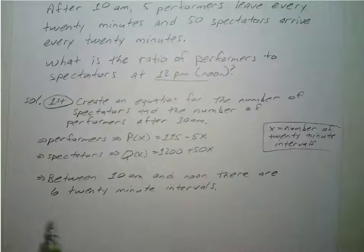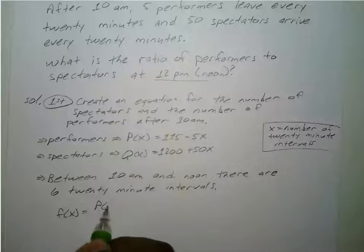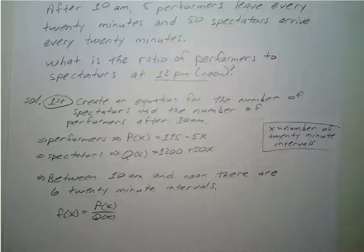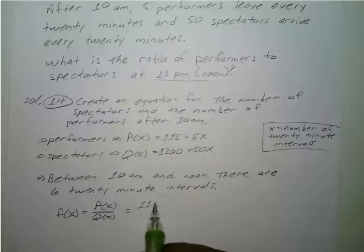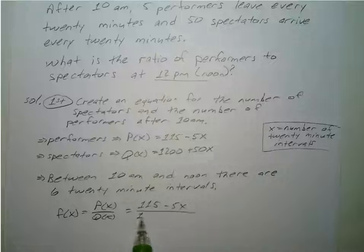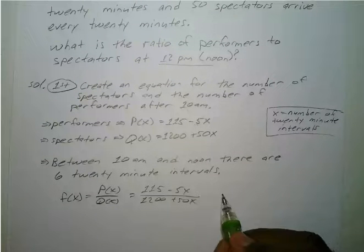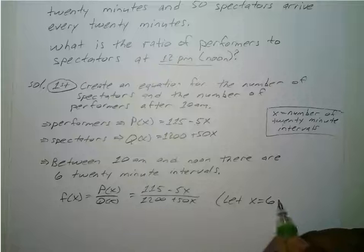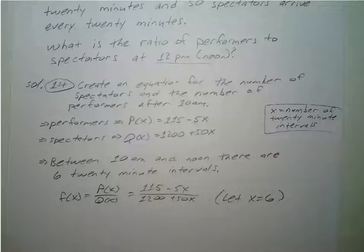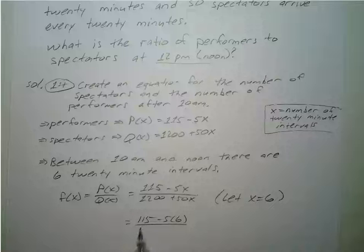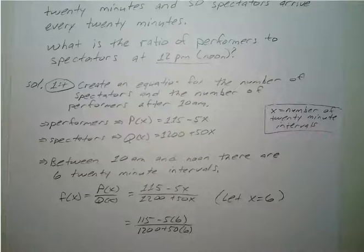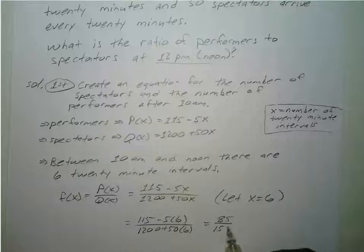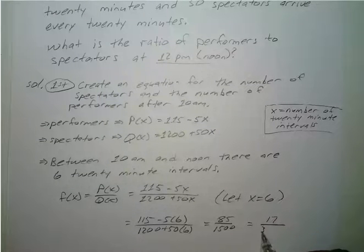So to find our ratio, f of x equals p of x over q of x, which is 115 minus 5x over 1,200 plus 50x. If we let x equal 6, that equals 115 minus 30 over 1,200 plus 300, which equals 85 over 1,500, giving a ratio of 17 to 300.